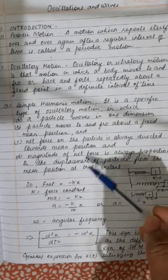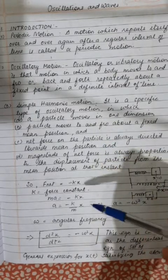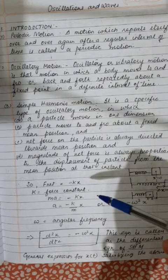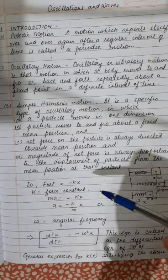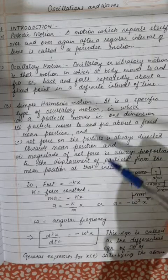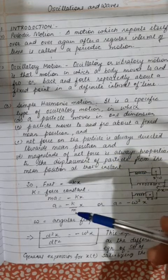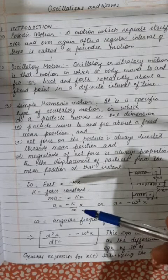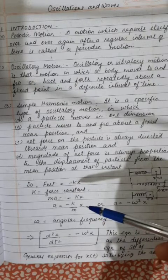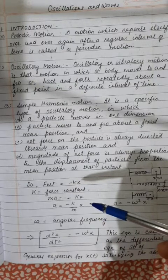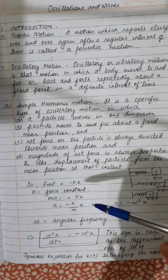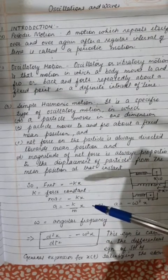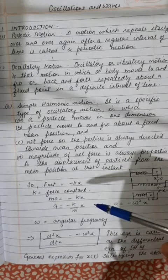Next is oscillatory motion. Oscillatory or vibratory motion is that motion in which a body moves to and fro or back and forth repeatedly about a fixed point in a definite time interval.